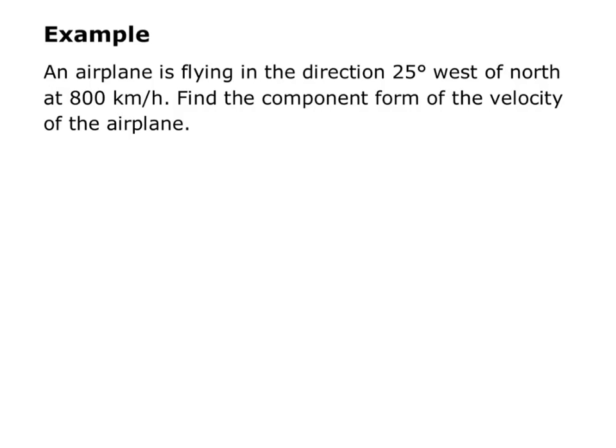Here's our example. An airplane is flying in the direction 25 degrees west of north, at 800 kilometers per hour. We want to find the component form of the velocity of the airplane. So remember, component form means in the angle brackets, as opposed to using the i and j. So, step one of my advice was draw a picture.